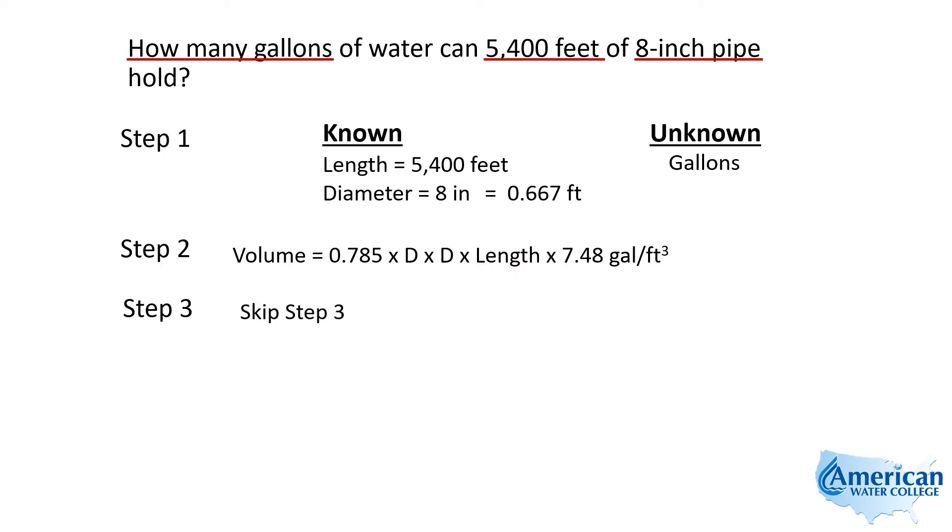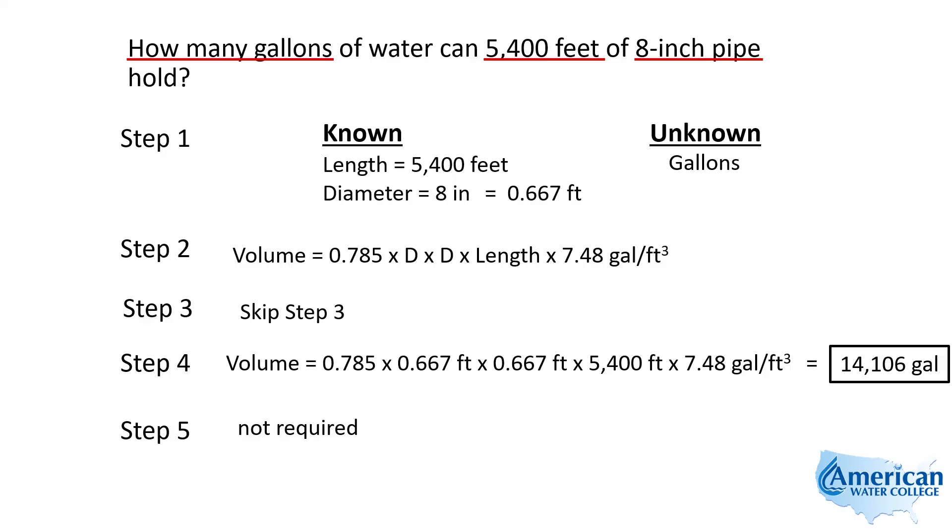We don't need to do step three because it's arranged how we want it. So step four, we're going to plug in our numbers. Notice I put in our 0.667 twice because it's diameter squared, and then our 5,400 foot length and the 7.48 gallons per cubic foot. And that gives us a total volume of 14,106 gallons.